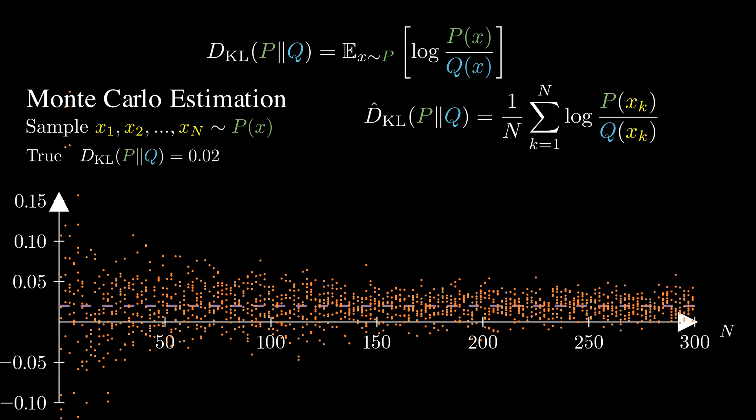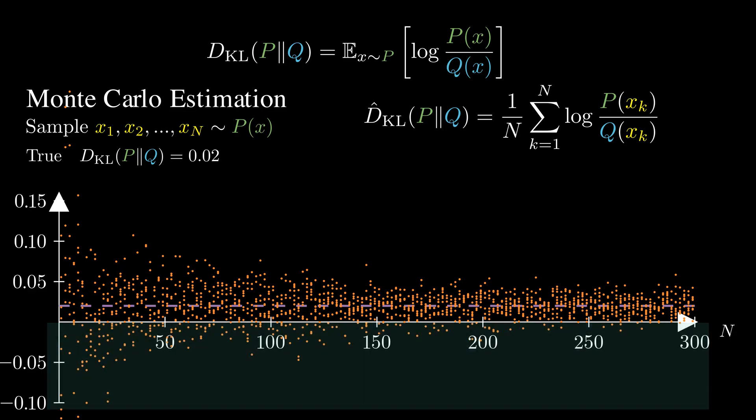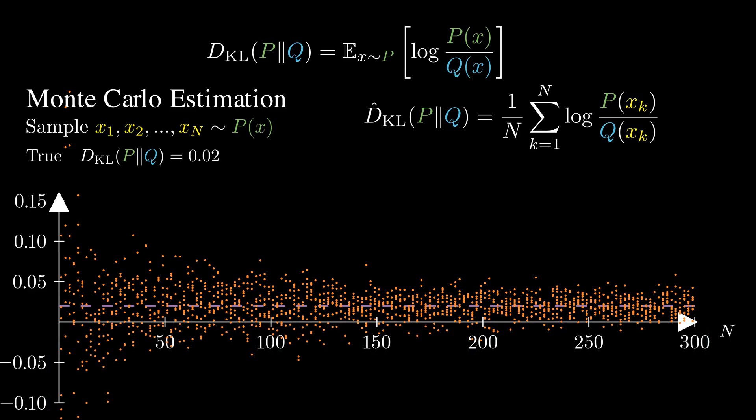Here we plot the results with different sample sizes n. For each n, we repeat the experiment 10 times and see how well it approximates the true KL value of 0.02. The good news, with enough samples, our estimator approaches the true value. The bad news, there is a lot of variation from one trial to another. This estimator has high variance. Even worse, some estimated values are negative, which shouldn't happen because KL divergence is always non-negative. So how do we reduce the variance?